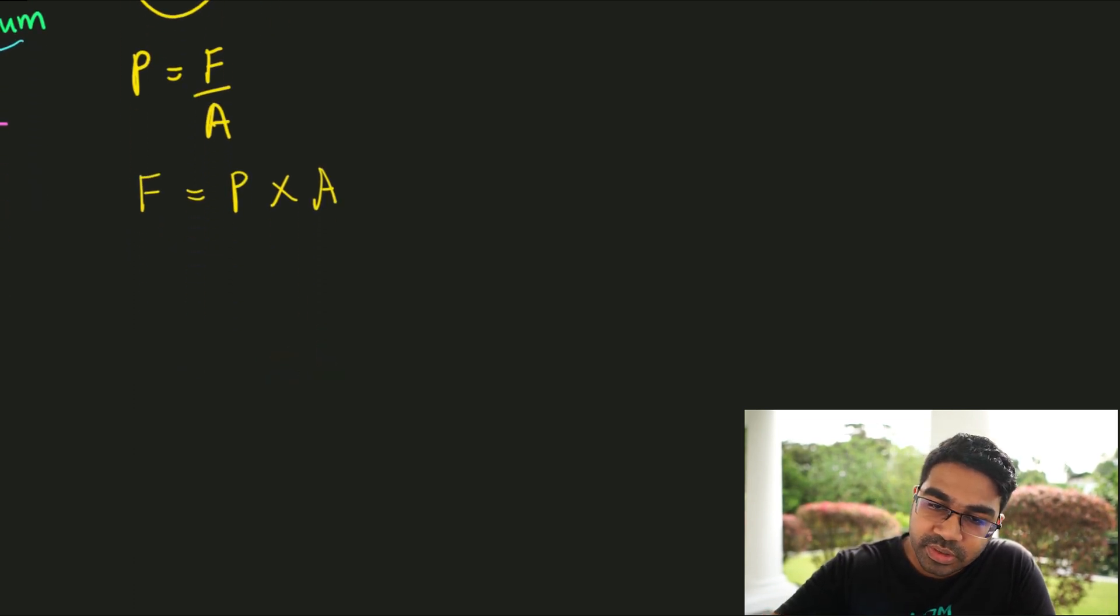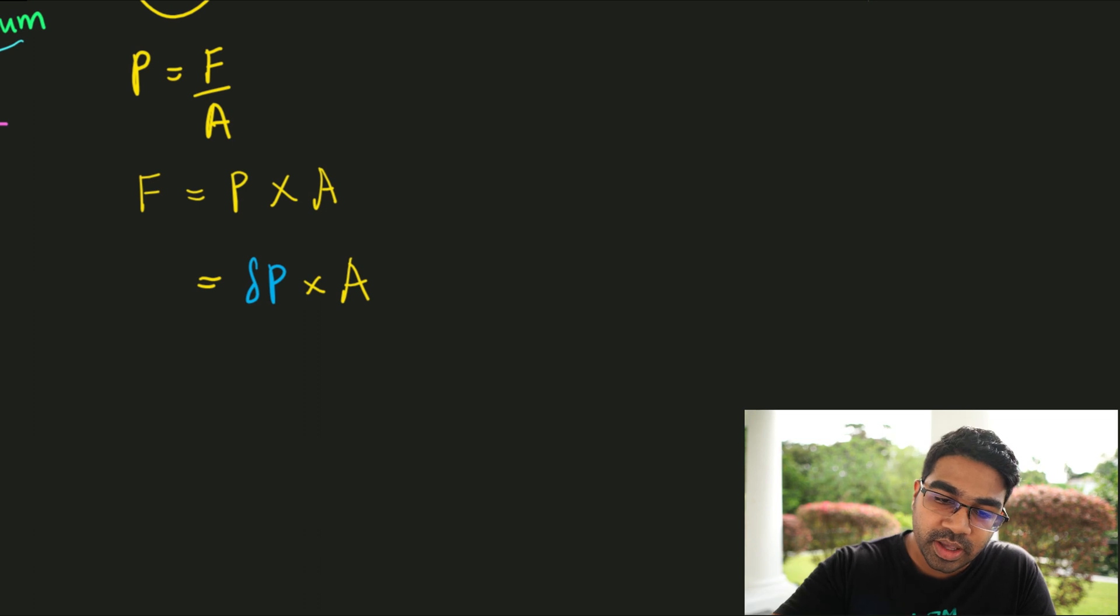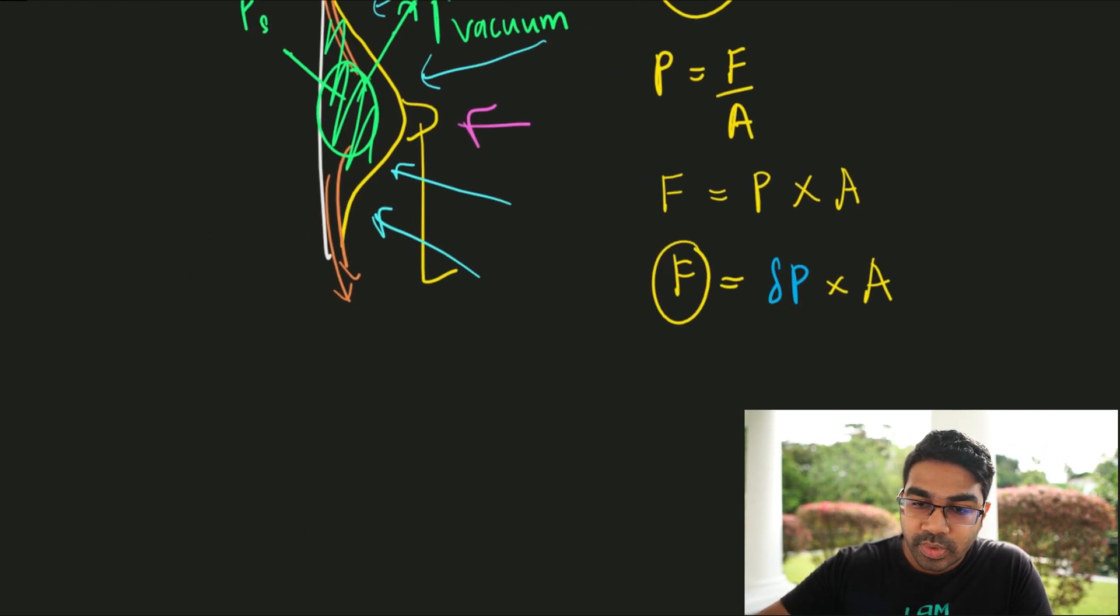And so, since there is a difference in pressure, delta P, this will be equals to delta P, the difference in pressure, multiplied by the area of the suction cup. So then we have a force that is going to press in.